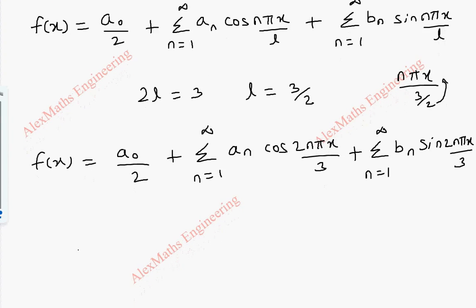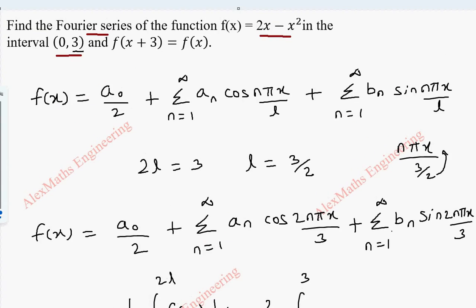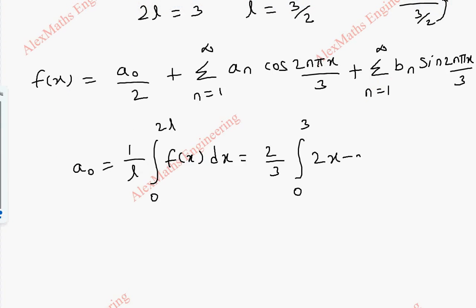Now, to find a0, we use the formula 1 by l, integral 0 to 2l, f of x dx. But 1 by l is 1 by (3/2), which is 2 by 3. So the integral is from 0 to 3, and f of x is 2x minus x squared dx. Now, 2 by 3 times: for 2x the integration is x squared by 2, and 2 is kept as a constant, minus x cubed by 3.